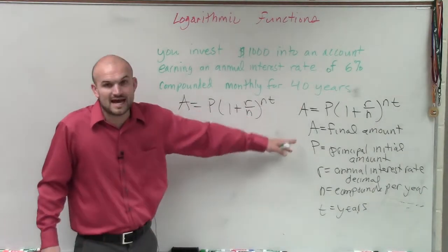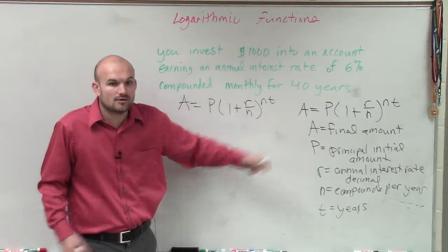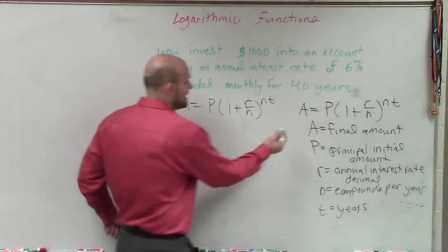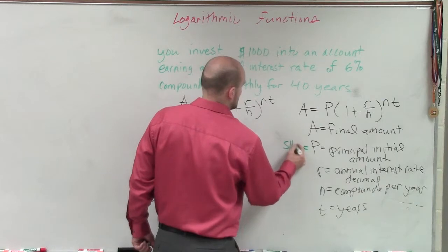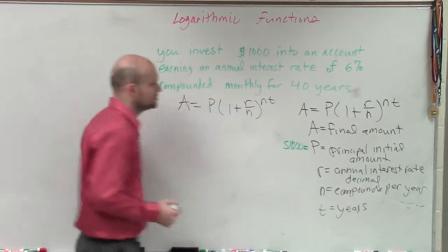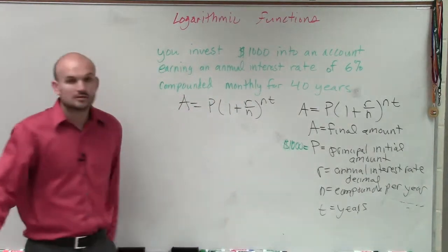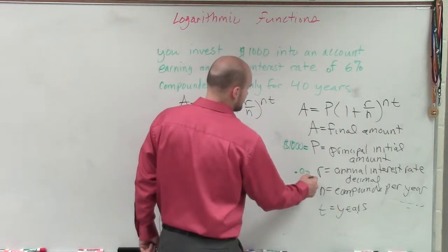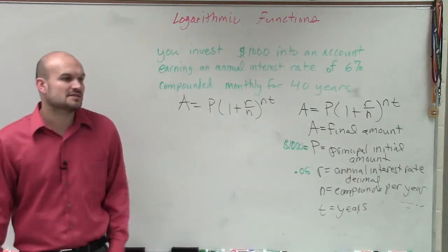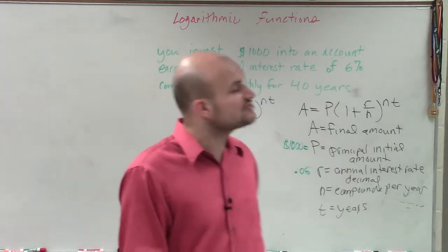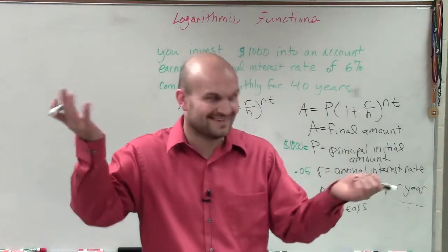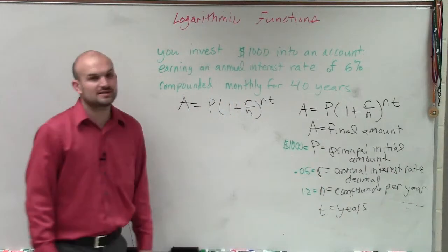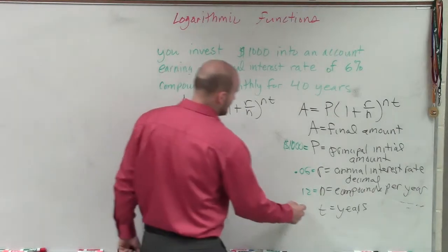Do we know what the final amount is, A? No, that's what we're trying to figure out. Do we know P, our principal? Yeah, that's $1,000. Do we know the interest rate? 6%, and to put 6% in decimal form, it's 0.06. Do we know the number of times it's going to be compounded per year? It says monthly, so that's 12 times. And the number of years is 40.